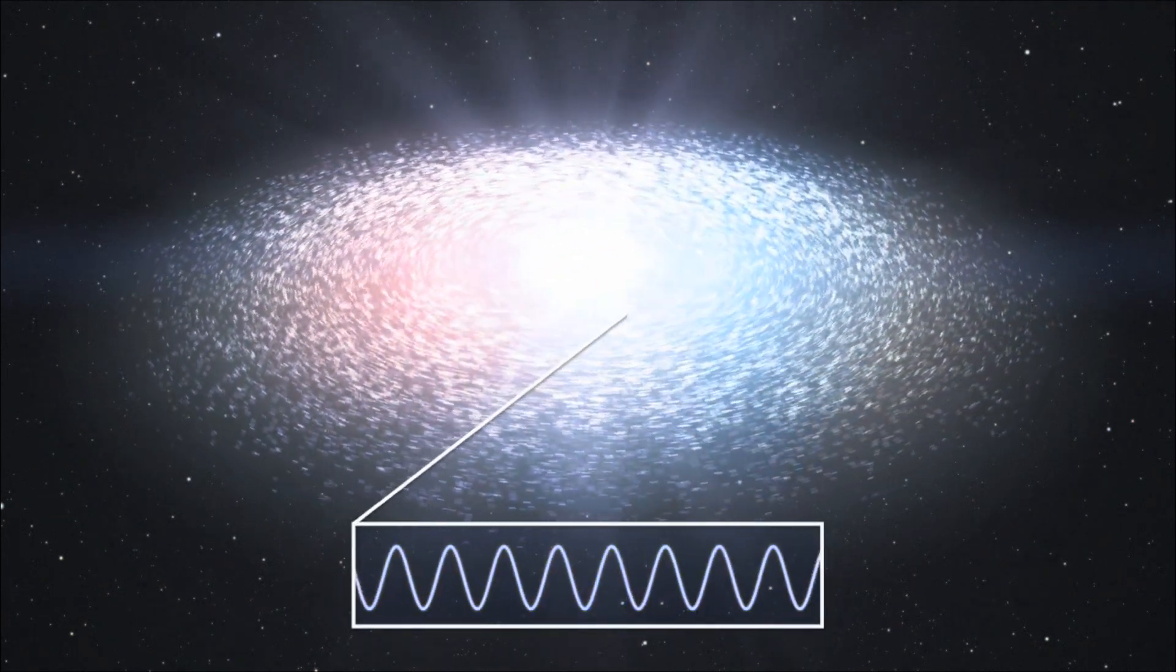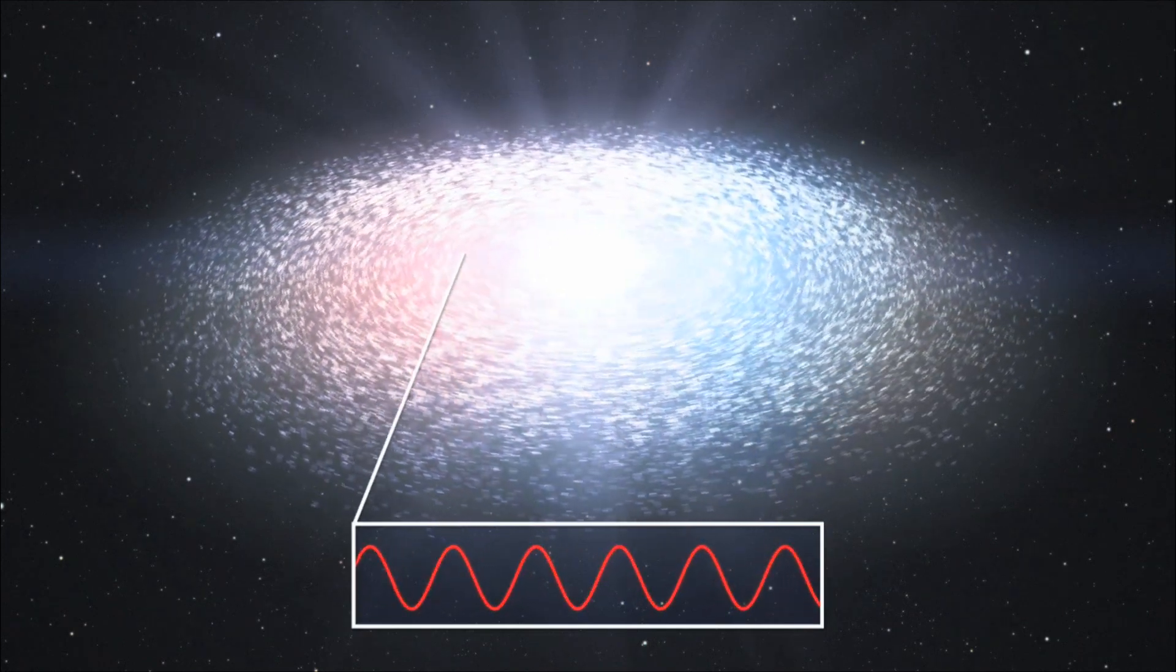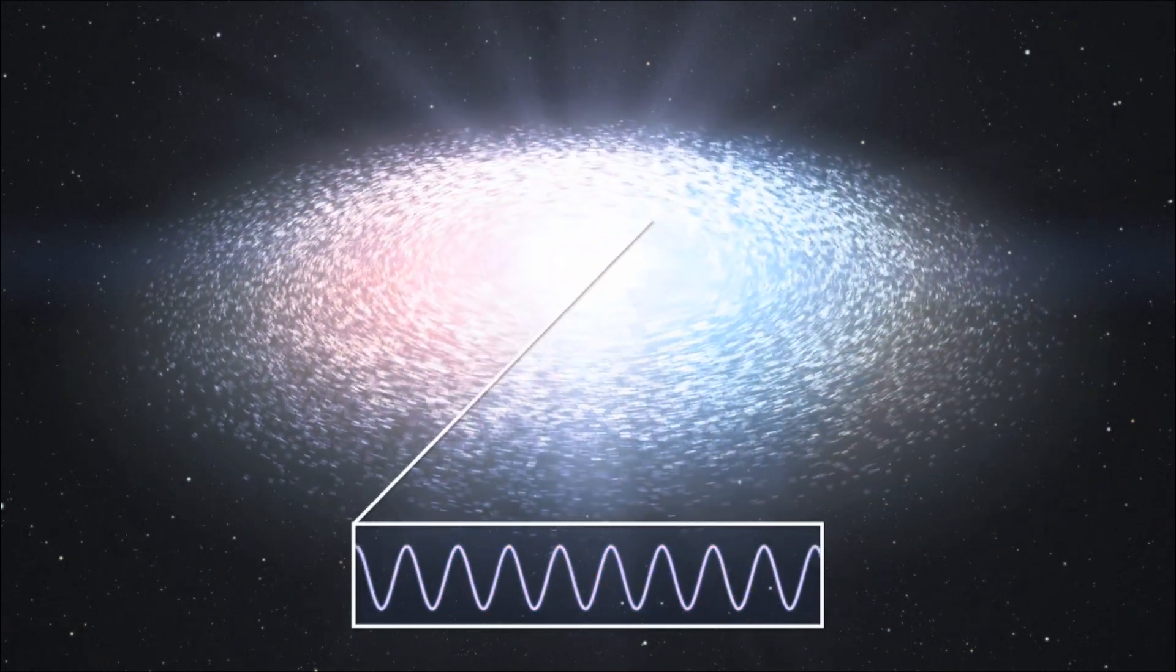This is because the wavelength of light is changed by the motion of an object emitting it. Think about how the pitch of an ambulance siren drops as it drives past you, because the sound waves are more spaced out as the vehicle moves away.